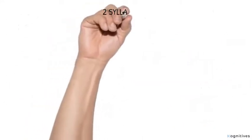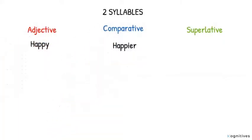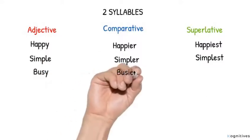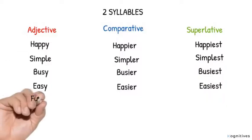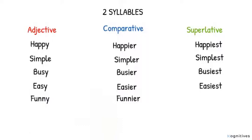Two syllables. Adjective, comparative, superlative. Number one: Happy, happier, happiest. Two: Simple, simpler, simplest. Three: Busy, busier, busiest. Four: Easy, easier, easiest. Five: Funny, funnier, funniest.